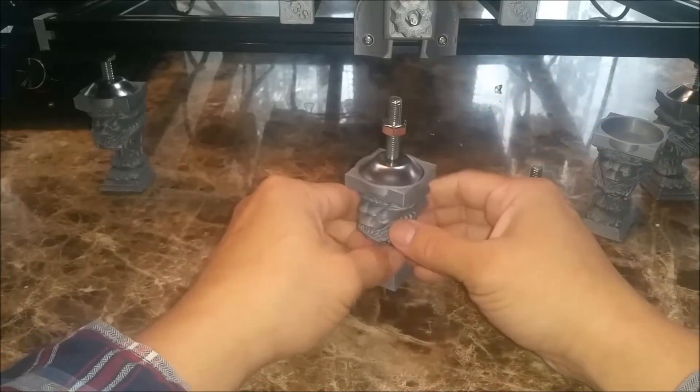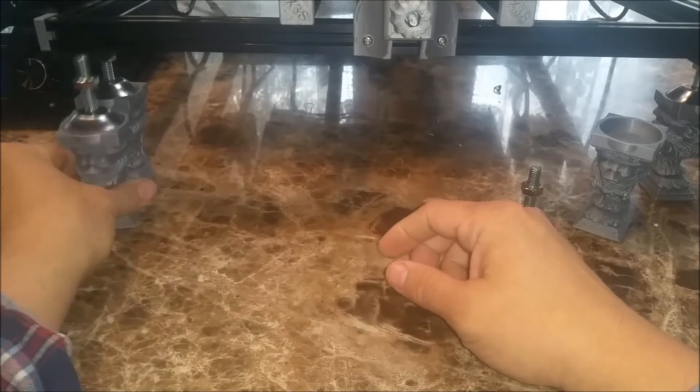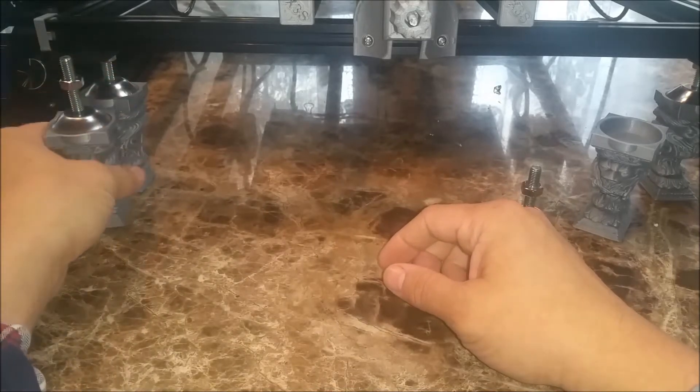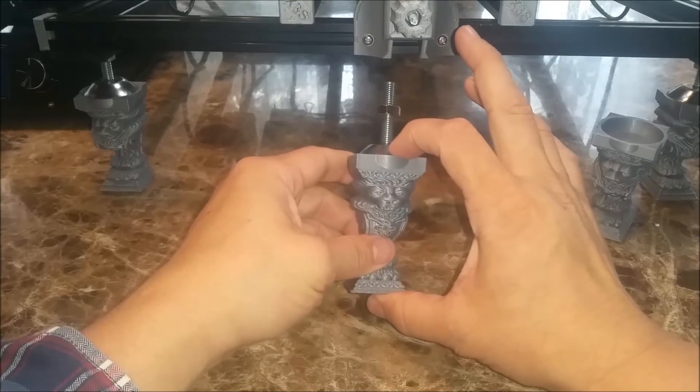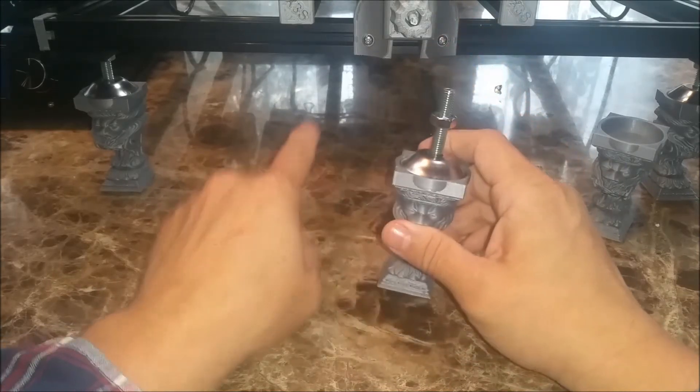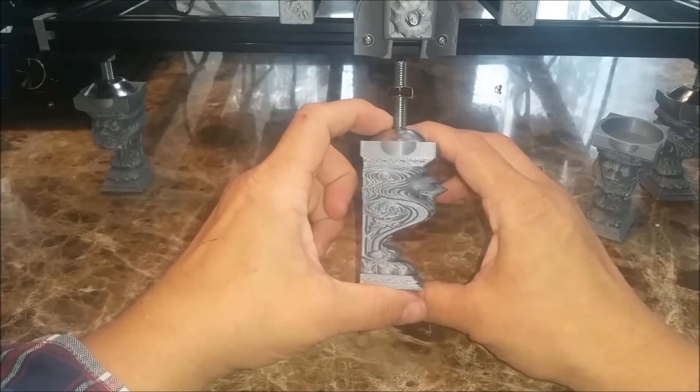And they're in there pretty solid - they don't come out. They should give you enough height that you could put your control box underneath the printer if you so desire.